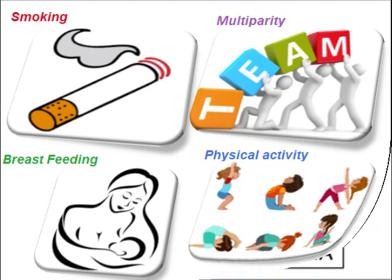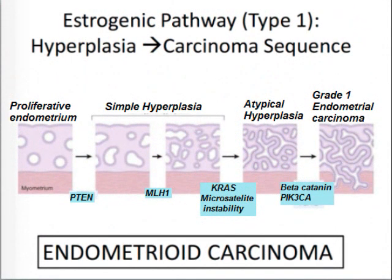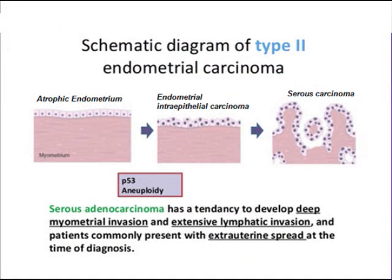There are mainly two types. Type 1 follows the typical hyperplasia-carcinoma sequence. It is more common, accounting for 80%, and is associated with PTEN and microsatellite instability mutations. Type 2 occurs in atrophic endometrium in elderly patients and is associated with mutation in the TP53 gene.